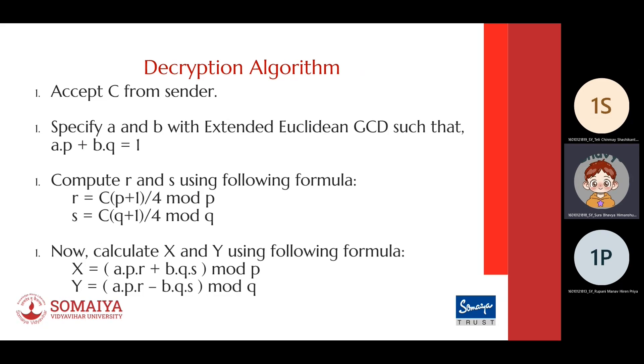Next we compute two temporary keys r and s using the following formula: r = c(p+1)/4 mod p.